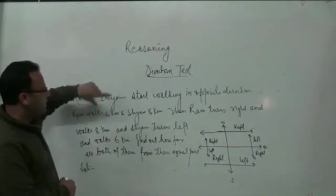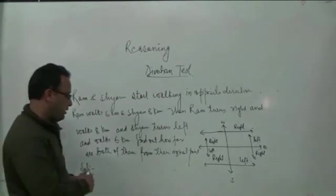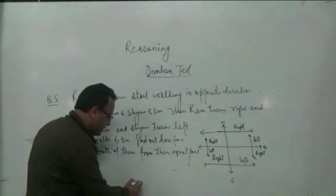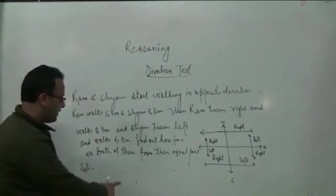In this case, two persons, Ram and Shyam, moving in opposite directions. Let's start with the center point. We will take the opposite direction. We will take the direction of Ram to the west.